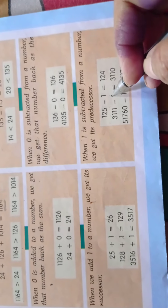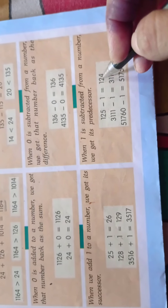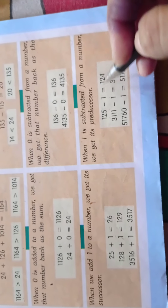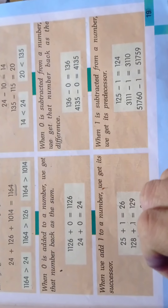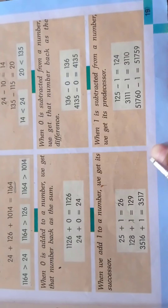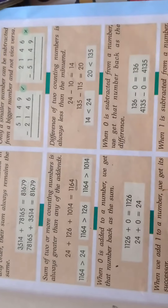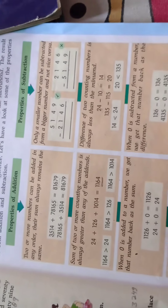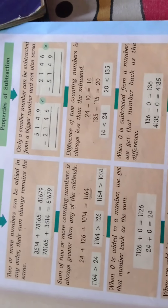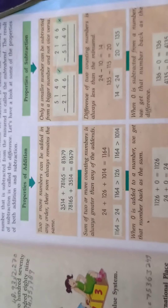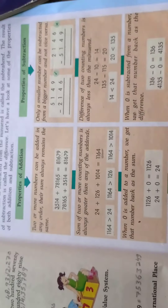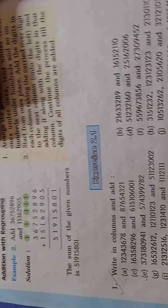अगर आप किसी भी number में one add करते हैं तो वो उसका successor हो जाता है। और one minus करते हैं — subtraction करते हैं — तो वो उसका predecessor हो जाता है। One plus करने से successor और one minus करने से predecessor।